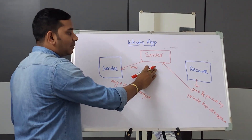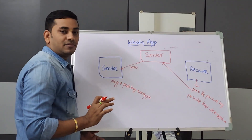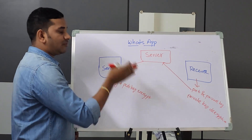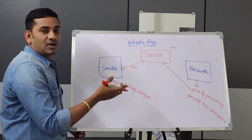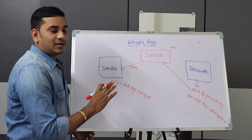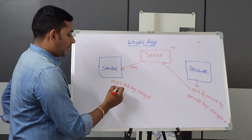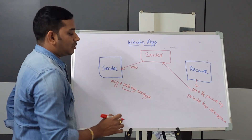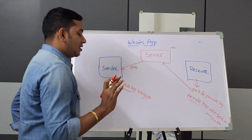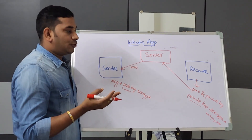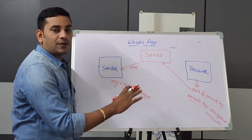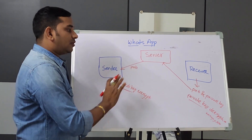The private key is stored only in your phone. Only your phone can decrypt the message using the private key. Even WhatsApp itself cannot read the message because the private key is never shared with WhatsApp servers. The communication is private and encrypted between only the two parties. Not even WhatsApp can open and read it. The rule is: public key is used for encryption, and private key is used for decryption.